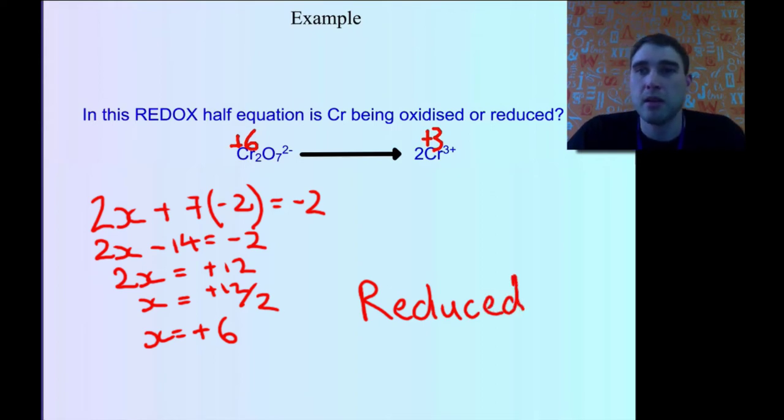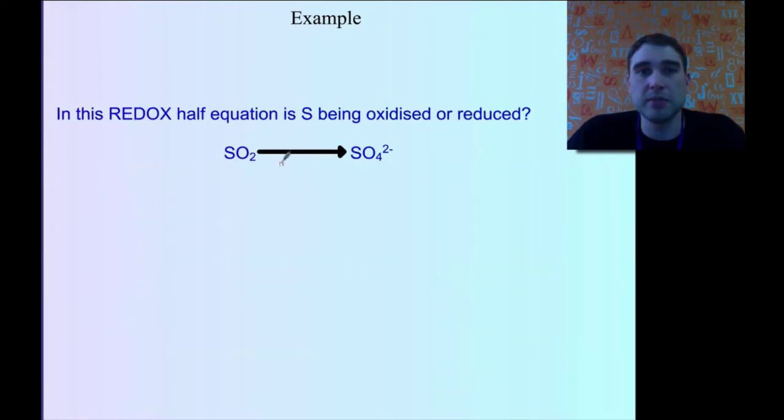Okay, we'll do one final example. We'll look at sulfur in this case - sulfur dioxide going to the sulfate ion. Is it being oxidized or reduced?